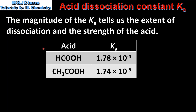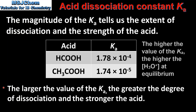In this table we have two acids: methanoic acid and ethanoic acid. The Ka of methanoic acid is 1.78 × 10⁻⁴, and the Ka of ethanoic acid is 1.74 × 10⁻⁵. The larger the value of the Ka, the greater the degree of dissociation and the stronger the acid. Therefore, methanoic acid has the larger Ka value and is the stronger of the two acids.